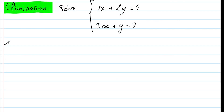Let's see the elimination method. Before we start, we need to think about the variables and their coefficients. If we look at y in the first equation, the variable is y and its coefficient is 2. In the second equation, the variable is also y, but the coefficient is 1. What we want is to have a variable in both equations with the same coefficient but opposite signs.